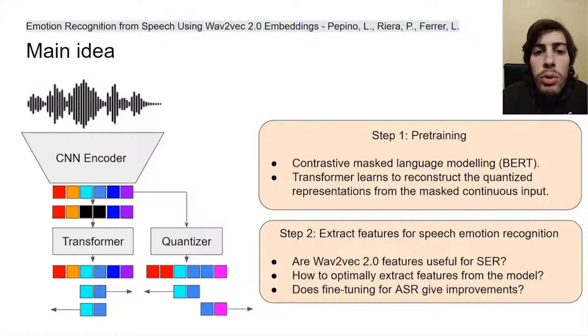In this work, we propose to use this very same model for speech emotion recognition instead of ASR. We want to extract features from this pre-trained model and see if they are useful for emotion recognition. Also, we want to know which is the best way to extract features from this model, and if the ASR fine-tuning adds some information that benefits speech emotion recognition.